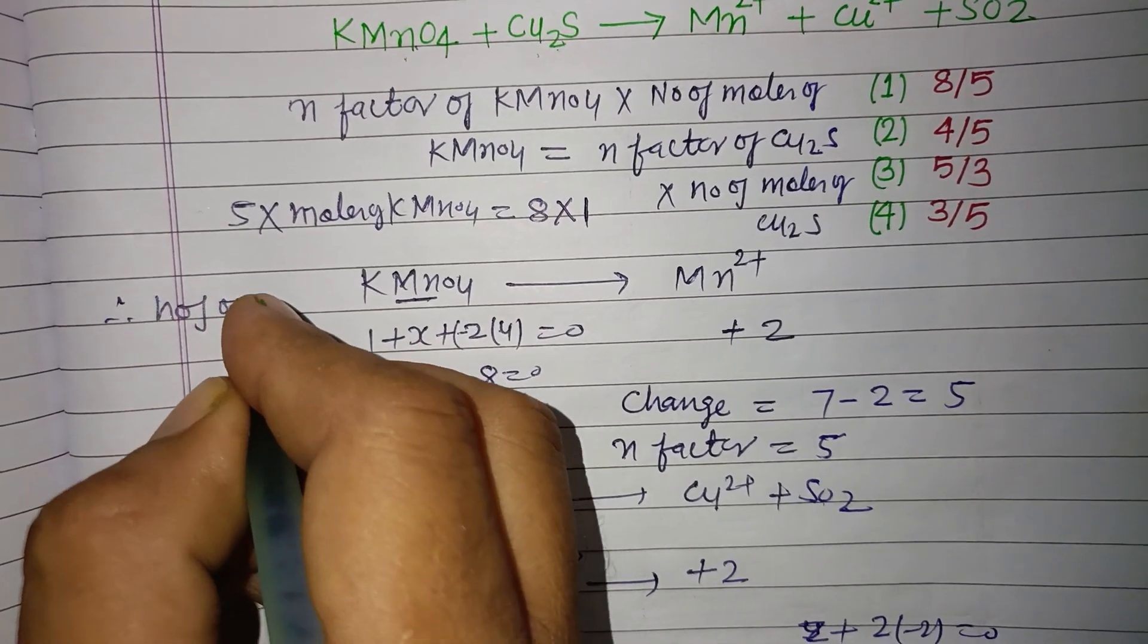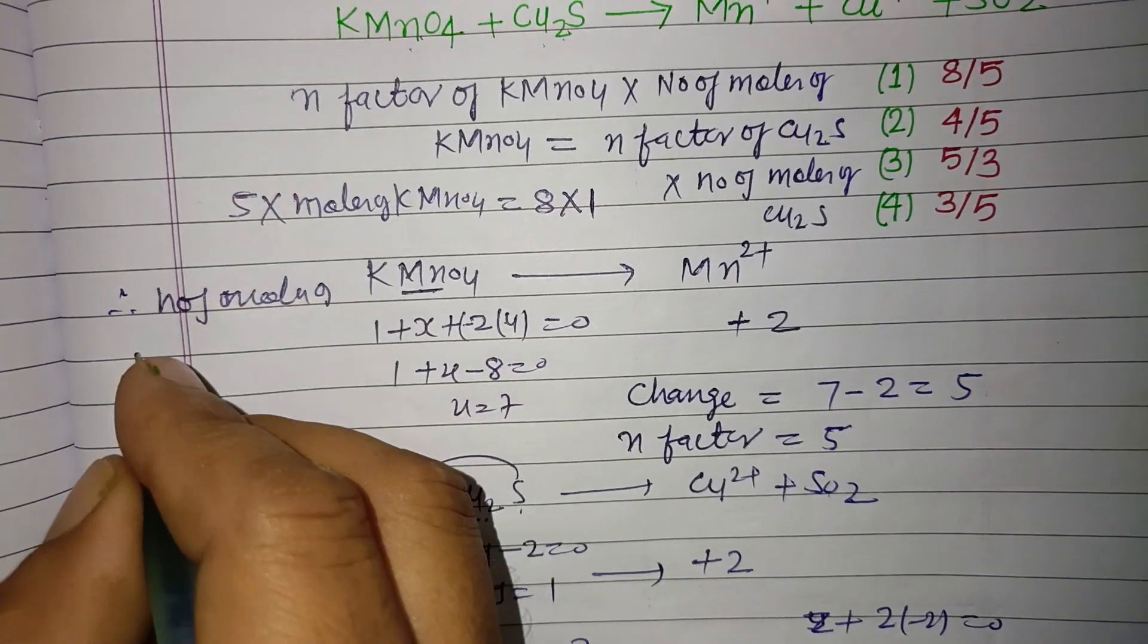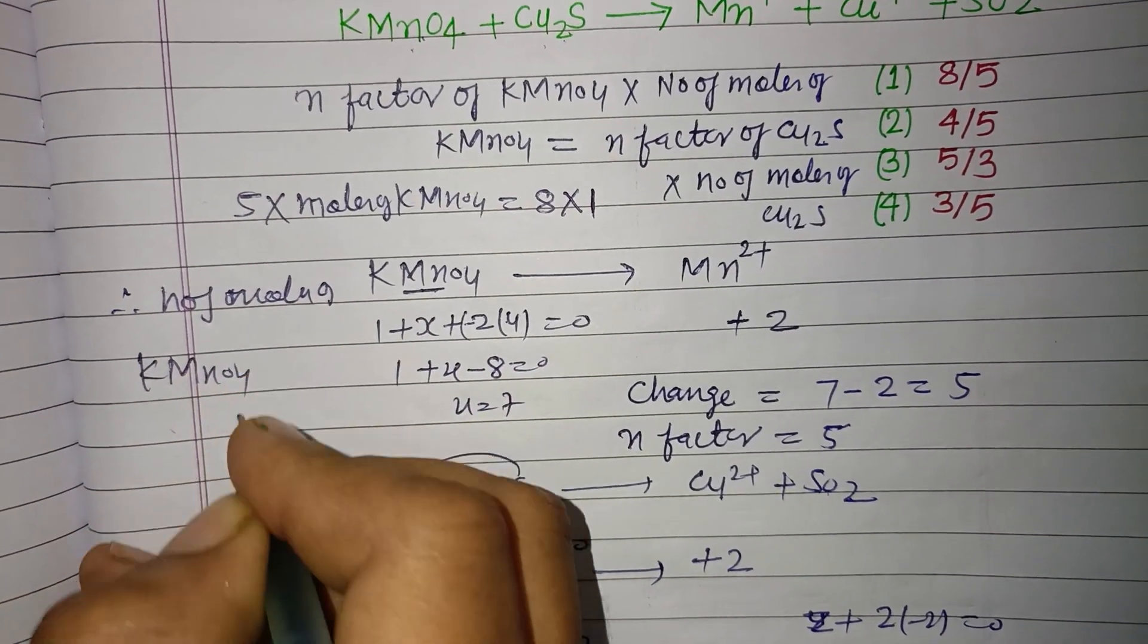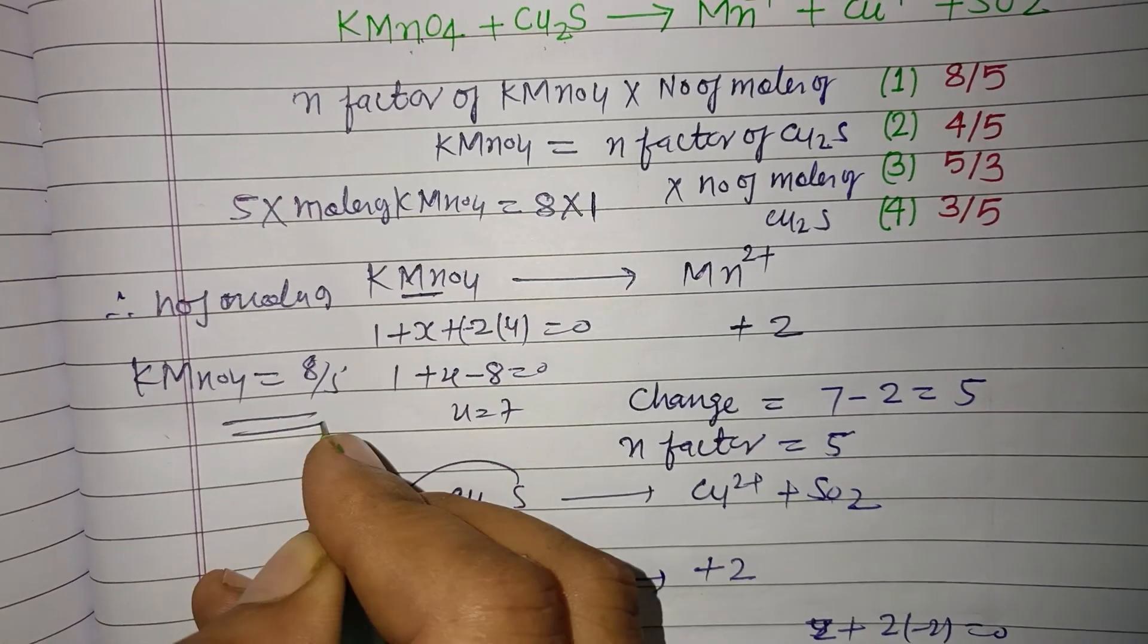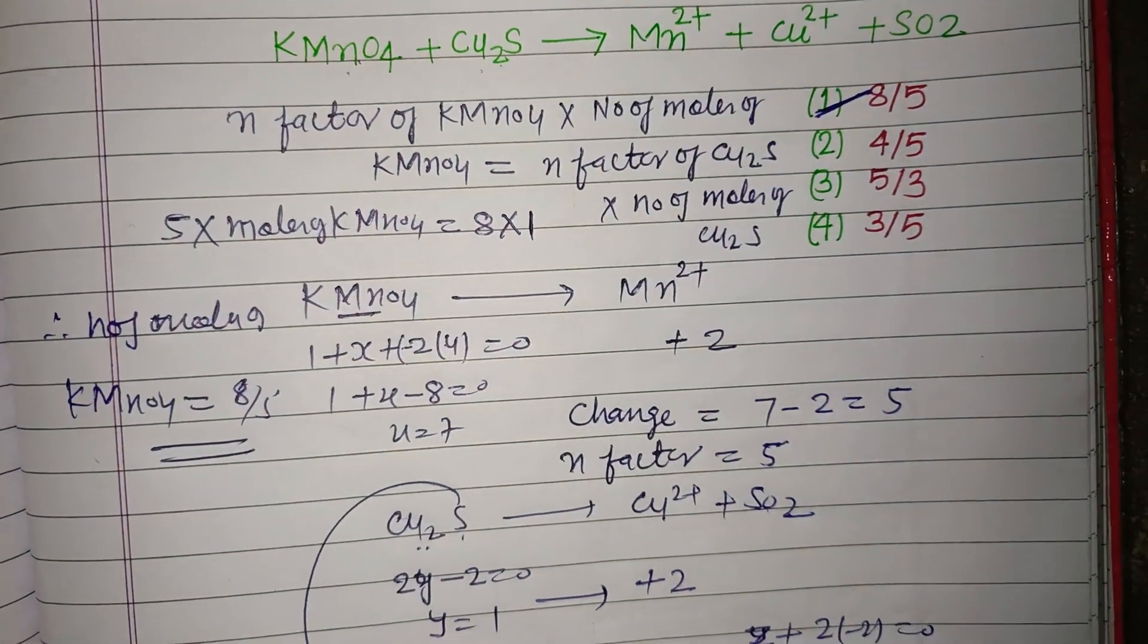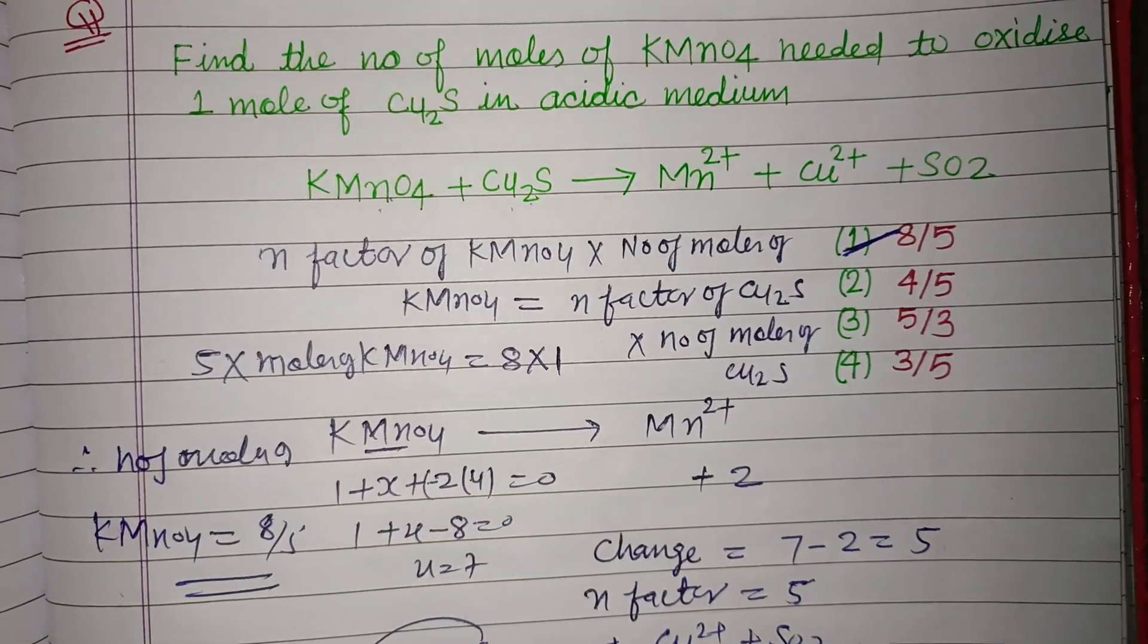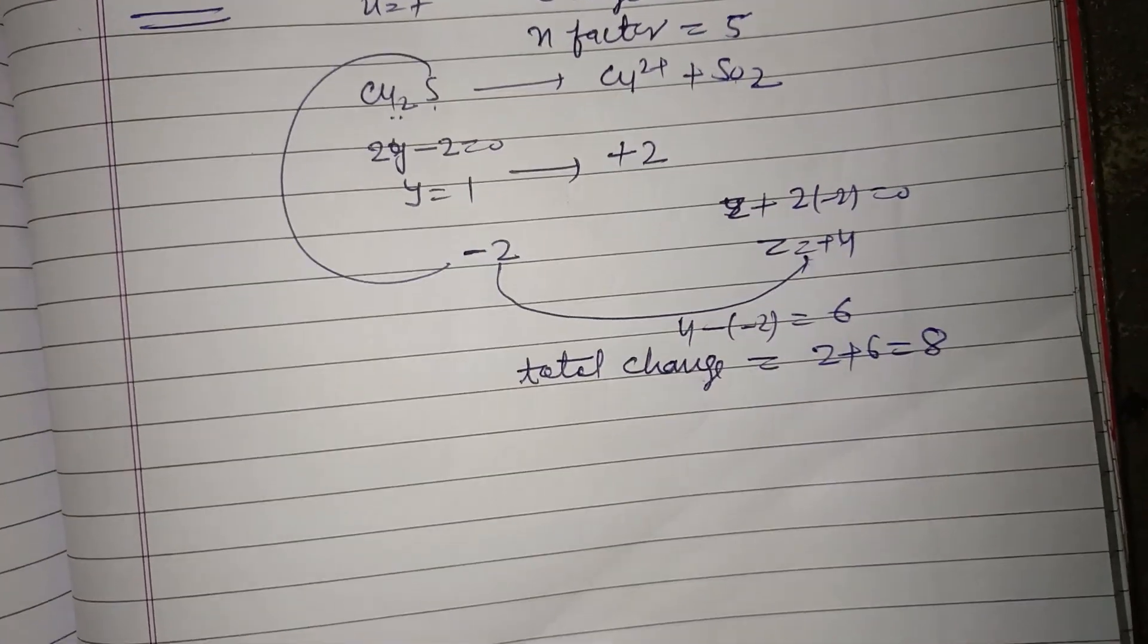equals n-factor of Cu2S, which is 8, times 1. Therefore, the number of moles of KMnO4 is 8/5. So 8/5 is the correct answer, which is option 1. I hope you got it. Please like the video and subscribe. Thanks for watching.